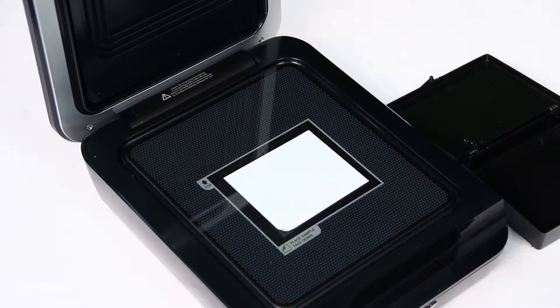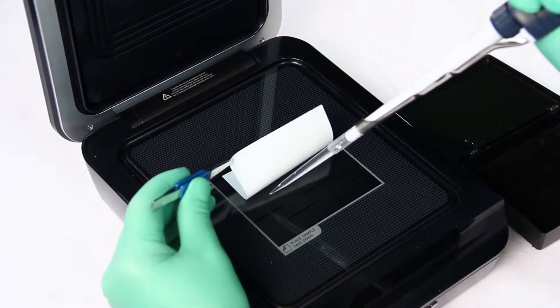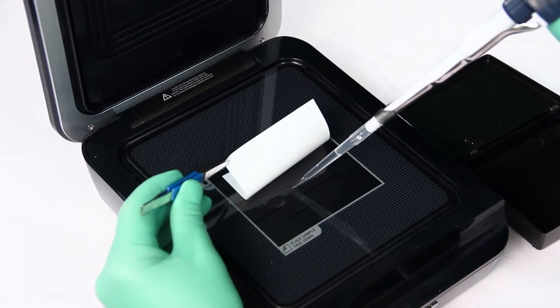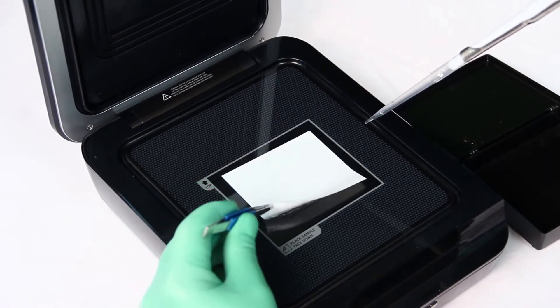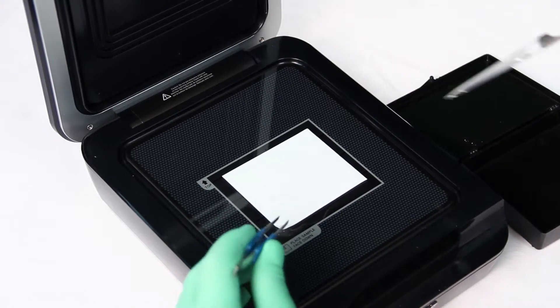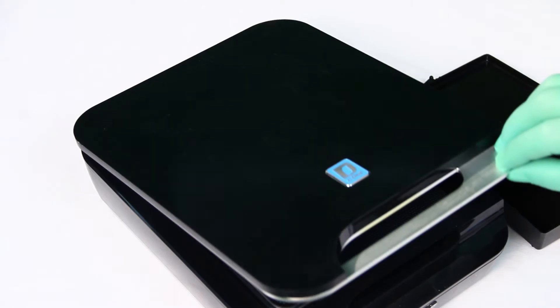The blot can be placed directly onto the scanner surface either before or after incubation with a chemiluminescent substrate. If substrate has not been added to the blot, you can add substrate directly to the blot on the scanner surface. After the appropriate incubation time for the substrate, you can then scan your membrane.